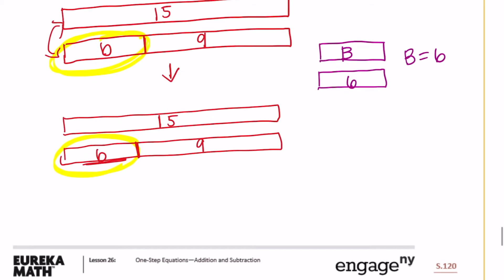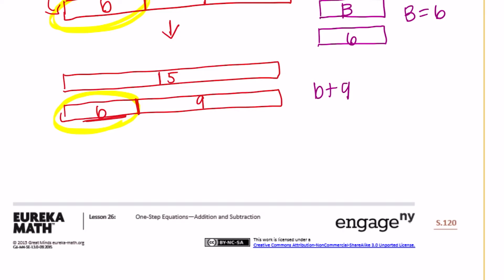Now let's do it algebraically. So it was b plus 9 equals 15. The extra piece hanging on here is plus 9, so I need to get rid of it by subtracting. We're going to have b plus 9 minus 9, because I'm trying to get b by itself. What I do to one side, I also have to do to the other, so I also do minus 9 on the right. So b plus 9 minus 9 is just b, and 15 minus 9 equals 6. So b equals 6.